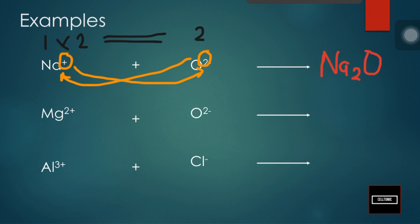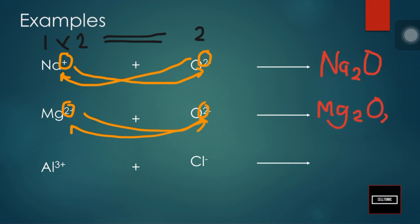Now let's look at magnesium and oxygen: Mg2+ and O2−. We apply the same crisscross method. What we are left with is Mg2O2. Since the values are the same, we cancel the 2s and just write MgO. If the subscript values are the same, we can cancel the number.